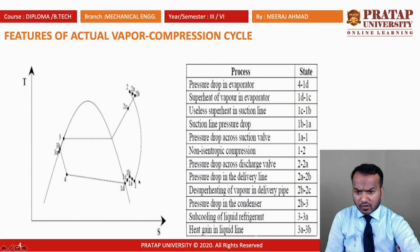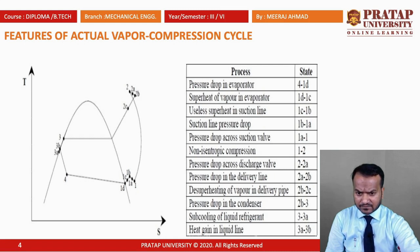Another important point: from the P-S diagram, the entropy at point 1 first increases and then decreases during compression. When vapor enters the compressor at low temperature, some heat enters the compressor, increasing entropy. But after compression heats the vapor to a higher temperature, heat is transferred from the compressor to the surroundings, causing a drop in entropy.